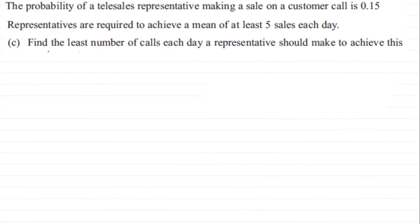Hi, now for this next part of the question we've already seen in the earlier parts that what we have is a binomial model. Let's just read this back again: the probability of a telesales representative making a sale on a customer call is 0.15.